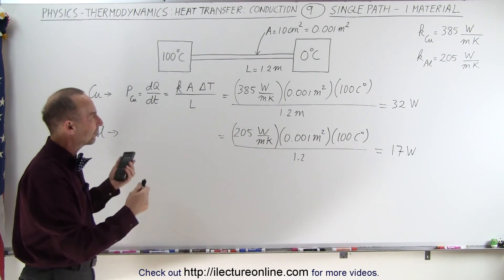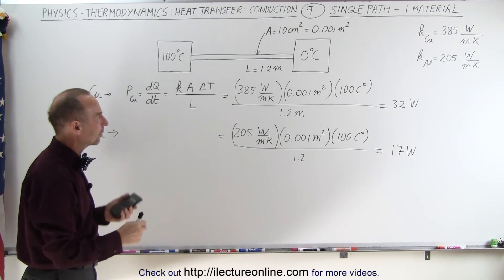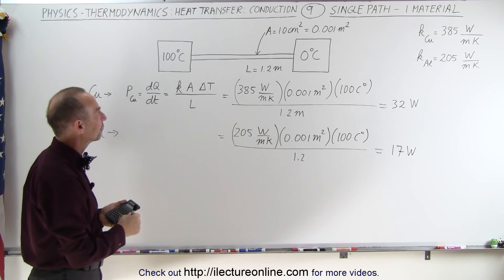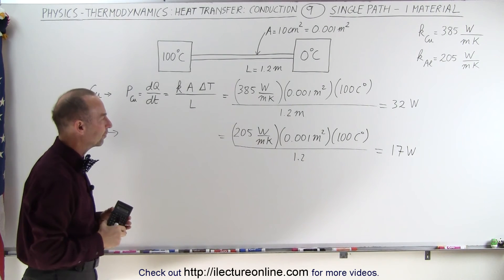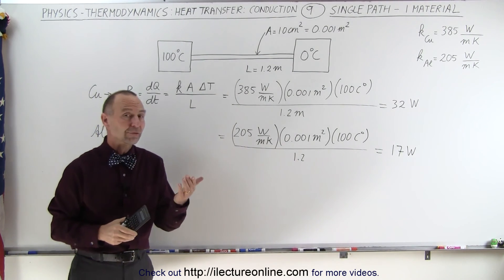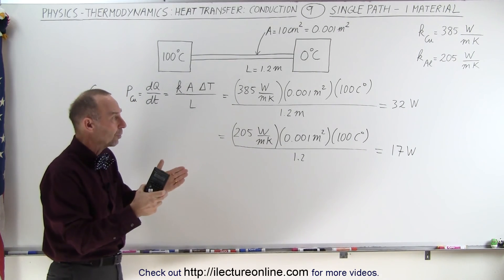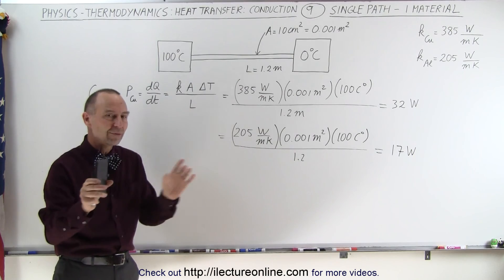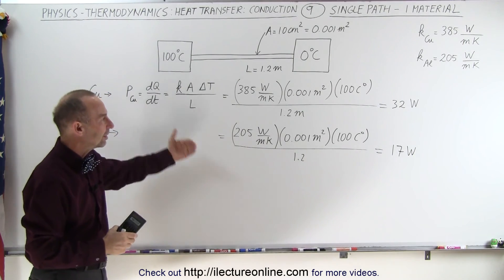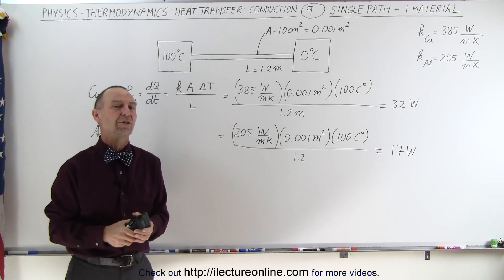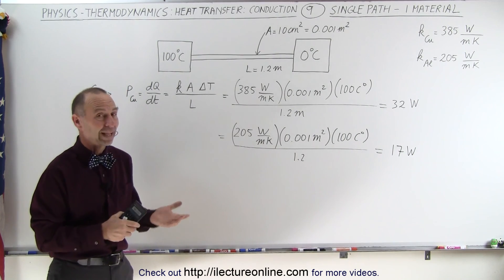So here we have a simple example where we have heat conducted across an object, so that's why we have to have a conducting path, and therefore it's called heat transfer through conduction. Now what we're going to do in the future videos is we're going to do some combinations. We're going to have multiple bars, we're going to have one bar but with different metals of different length, and see in each case how we can calculate the power transferred or the heat transferred across the conducting path. And that's how it's done.